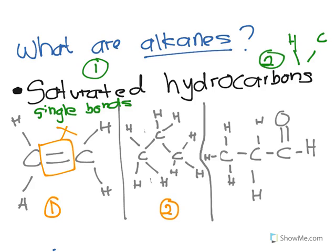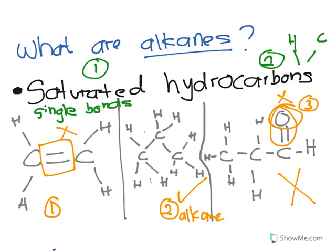Let's look at the second molecule. Is it saturated? Yes — all of the bonds between the carbon and hydrogen are single bonds. Is it a hydrocarbon? All carbon, all hydrogen, no other atoms. So yes, this is an alkane. Now the third molecule — is it 100% single bonds? Nope, it has a double bond between the terminal carbon and the oxygen. And it has an oxygen, so it's not a hydrocarbon. So basically, alkanes are saturated hydrocarbons: 100% single bonds, 100% composed of hydrogen and carbon.